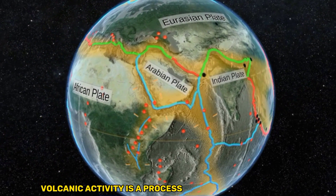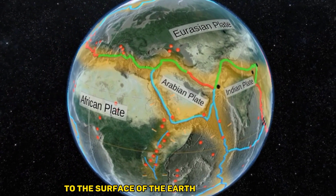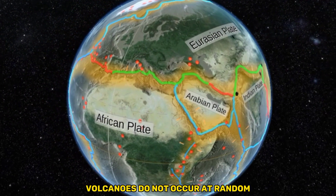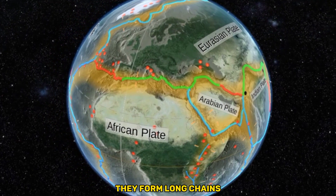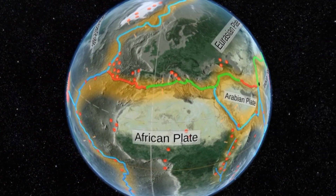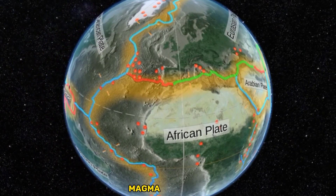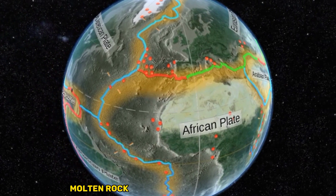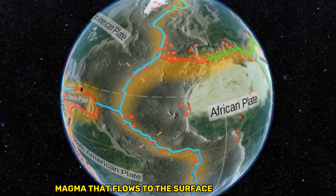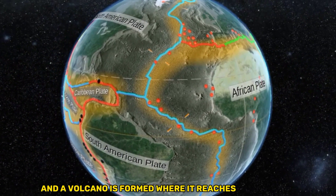Volcanic activity is a process of magma being ejected to the surface of the Earth out of its crust. Volcanoes do not occur at random — they form long chains which are essentially the boundaries of tectonic plates. Volcanic activity has an important role in mountain formation. Magma is red-hot molten rock beneath the Earth's surface. Magma that flows to the surface is called lava, and a volcano is formed where it reaches the surface.